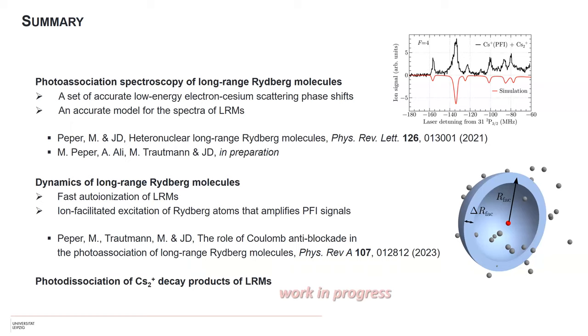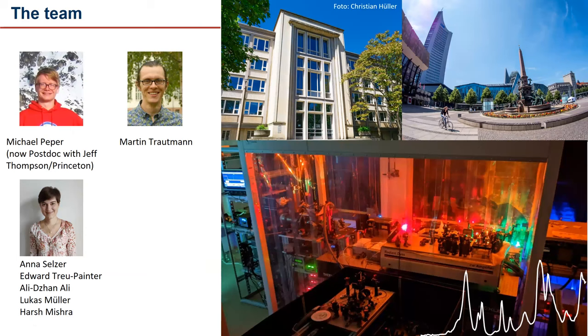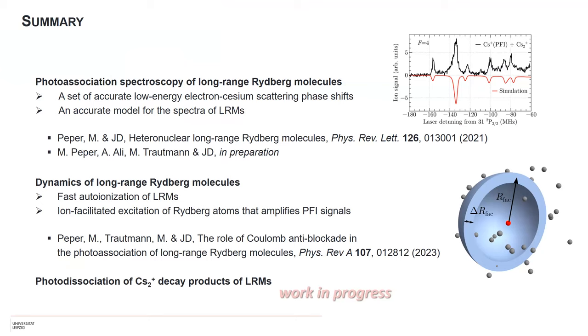Looking at the kinetics, there are some mysteries, but more or less the loss of Cs2+ is compatible with the increase in fast Cs+. I'll skip the summary and just thank the people that did the work: Joep Raha who is now in Princeton with Jeff Thompson, Martin Troutman the postdoc, and several students that contributed in projects to the work. Thank you.